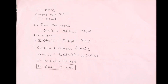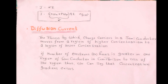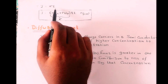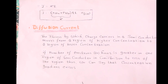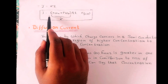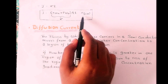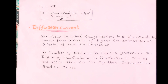We also know there is another expression for current density: J = σE, where σ is the conductivity and E is the electric field. If we compare this with our previous expression, we can see that σ = nμn + pμp. This is all about drift current.